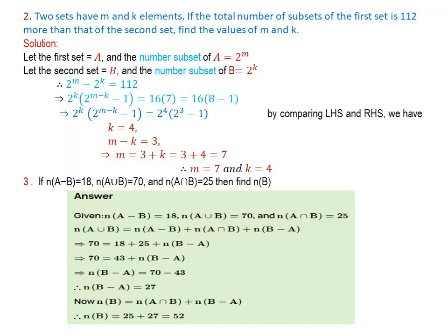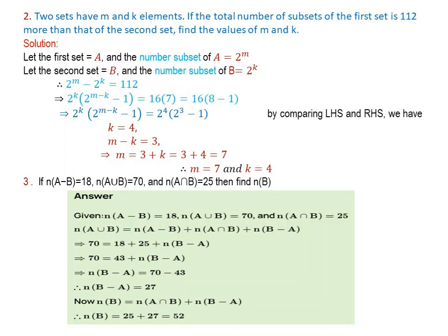We rewrite: 2 to the power of M minus 2 to the power of K equals 2 to the power of K times (2 to the power of M minus K minus 1). This equals 112, which factors as 16 times 7. And 7 equals 8 minus 1, so 112 equals 16 times (8 minus 1).